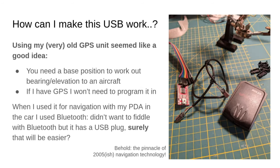I had my old GPS unit — this is from around 2005. You need the base position to work out where you are, and getting that from GPS sounds like a good idea. I knew I used to use it for navigation on my PDA — excuse me while I just crumble into dust. That used Bluetooth, and I didn't want to mess with that. I thought surely it would be easier to get it working over USB.